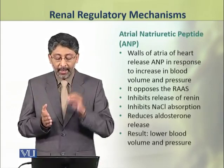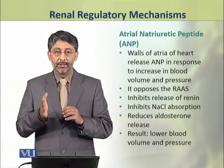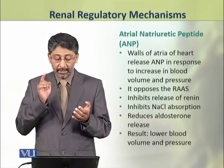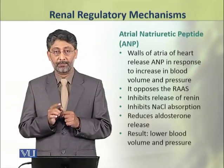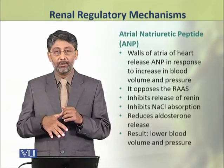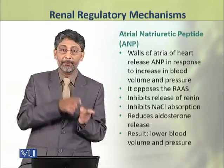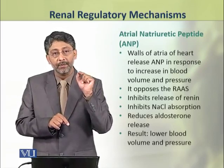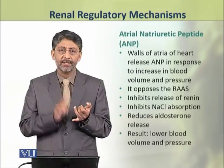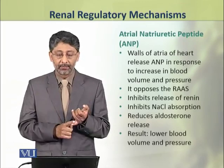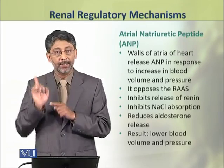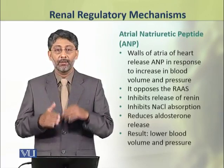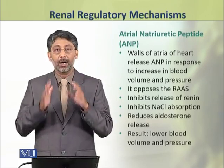The atrial natriuretic peptide is released from the walls of the atria of the heart in response to increased blood volume and pressure — the opposite condition to what triggers RAS release. Its functions are also opposite to those of RAS: it inhibits the release of renin, inhibits sodium chloride reabsorption, and reduces aldosterone release. As a result, blood volume and pressure are lowered.